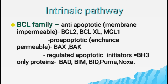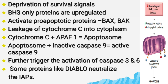There are three BCL family proteins: anti-apoptotic, pro-apoptotic, and regulated apoptotic initiators also known as BH3-only proteins. Anti-apoptotic proteins keep the mitochondrial outer membrane impermeable, pro-apoptotic proteins enhance permeability, and BH3-only proteins upregulate pro-apoptotic molecules. When there is deprivation of survival signals due to DNA damage or accumulation of misfolded proteins, BH3-only proteins are upregulated and activate pro-apoptotic proteins like BAX and BAK.